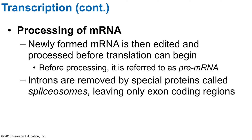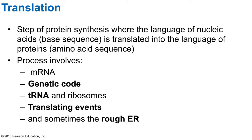The newly formed mRNA is then edited and processed before translation can begin, and before processing it's called pre-mRNA. Introns are removed by special proteins called spliceosomes, leaving only the exon regions — the coding regions. Now we move from transcription to translation.